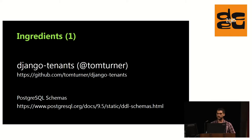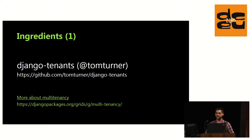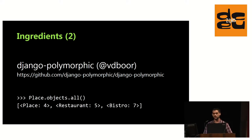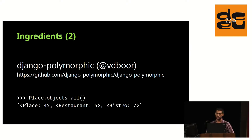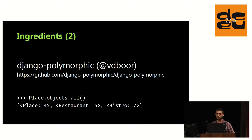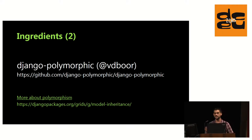For the MTPU recipe we use django-tenants, which relies on Postgres schemas to isolate tenant tables within a single database. It creates a new schema for every new tenant while keeping shared tables in the default public schema. More ingredients can be found at djangopackages.com under the multi-tenancy grid. For handling model hierarchies we use django-polymorphic — if we define models using concrete inheritance, we can query parent models and get downcasted instances. For example, with Places, Restaurants, and Bistros, querying Places returns not just Place instances but the actual types. This comes at the cost of some extra joins and a little dark magic, but shouldn't be a problem if the hierarchy isn't too complex.